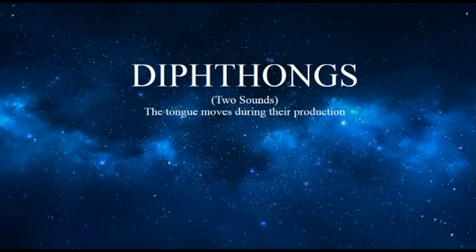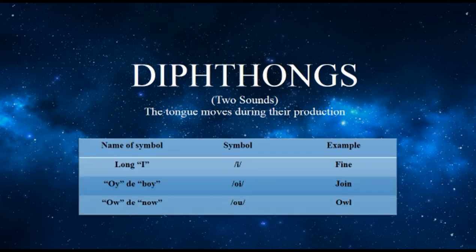I'm going to talk about diphthongs. Diphthongs — in Latin meaning 'two sounds' — is the part of speech in which the tongue moves during their production. There are three of them in American English: long I, OI as in 'boy', and AU as in 'now'. I'm going to explain each of them.